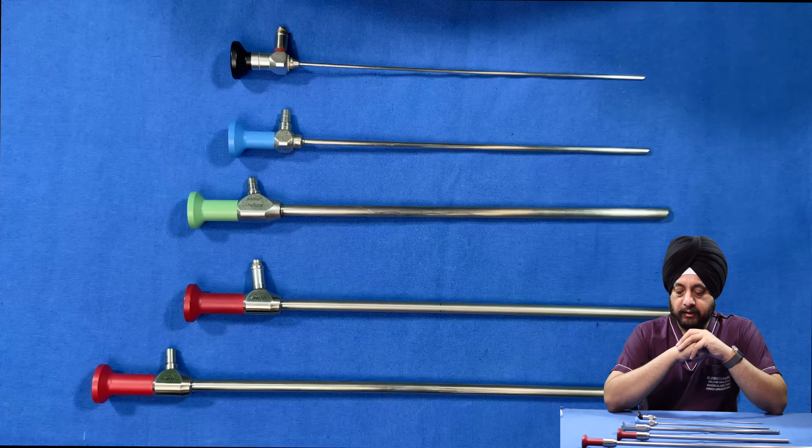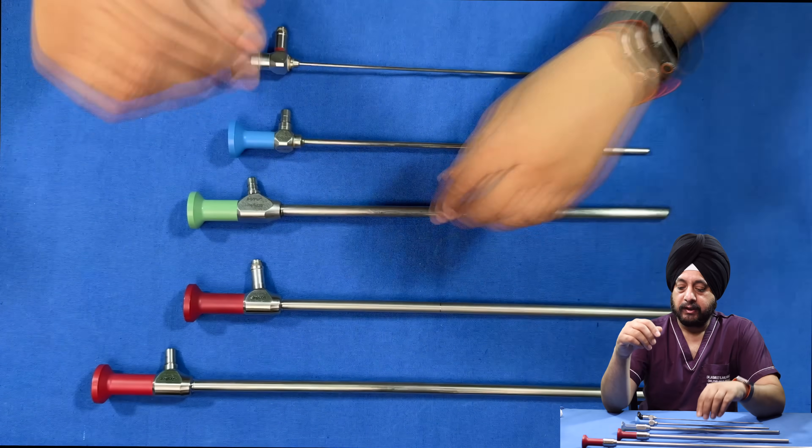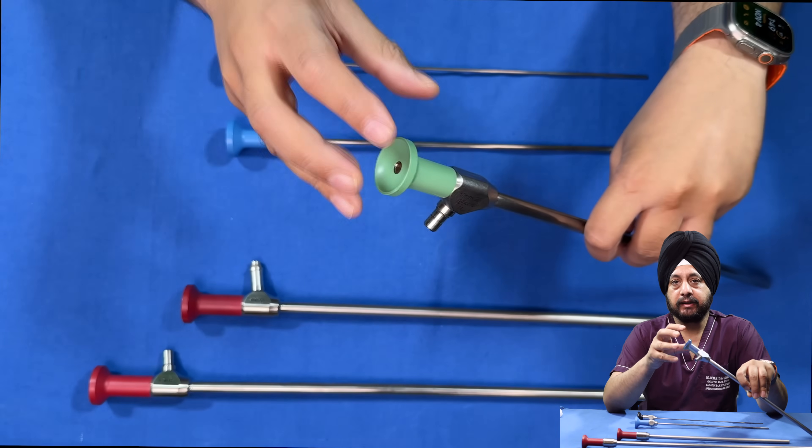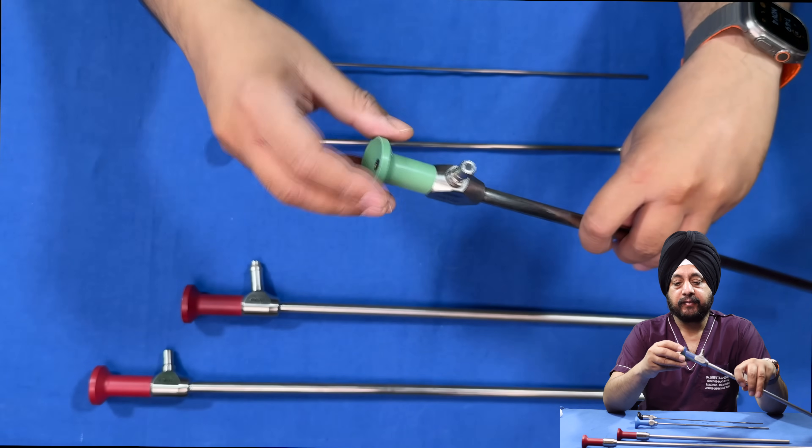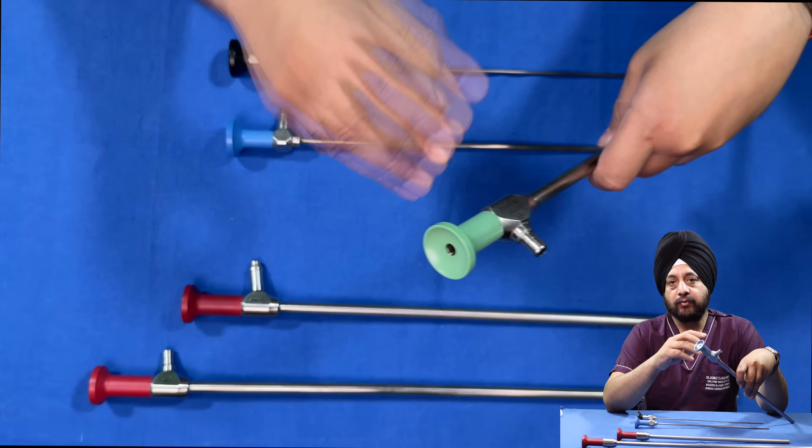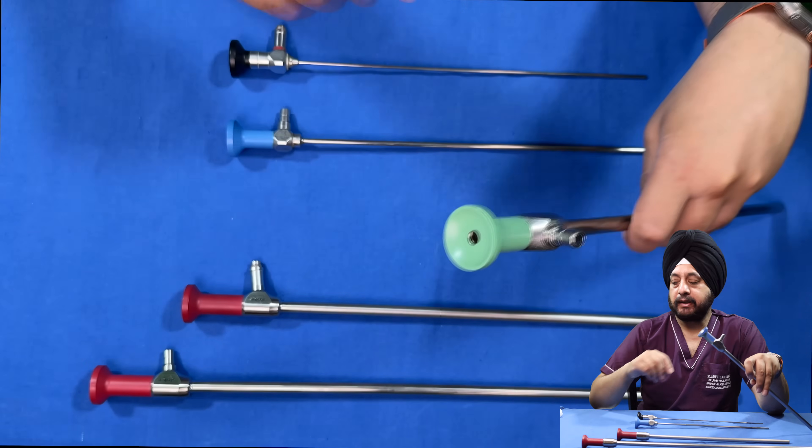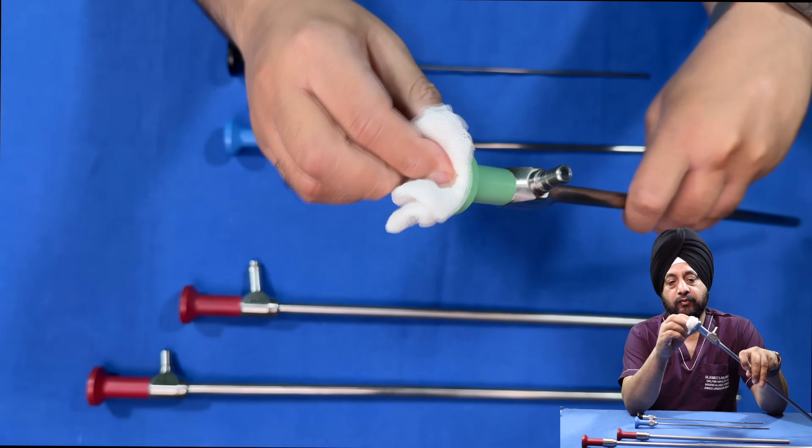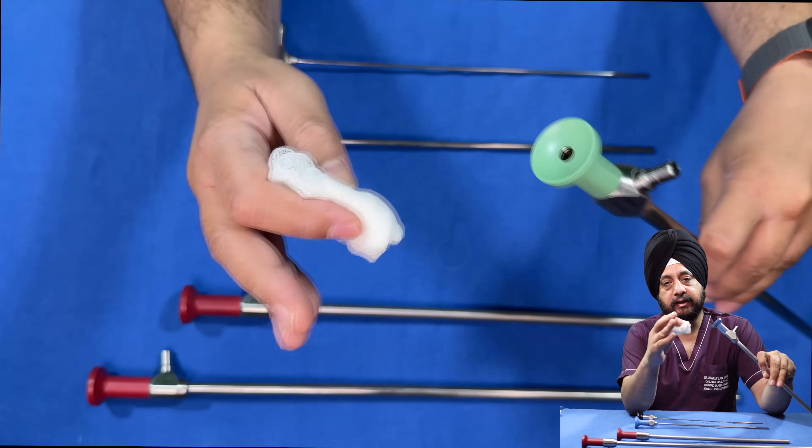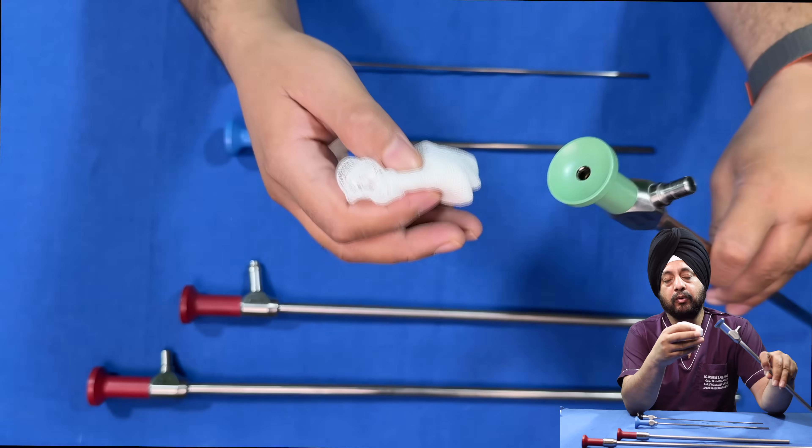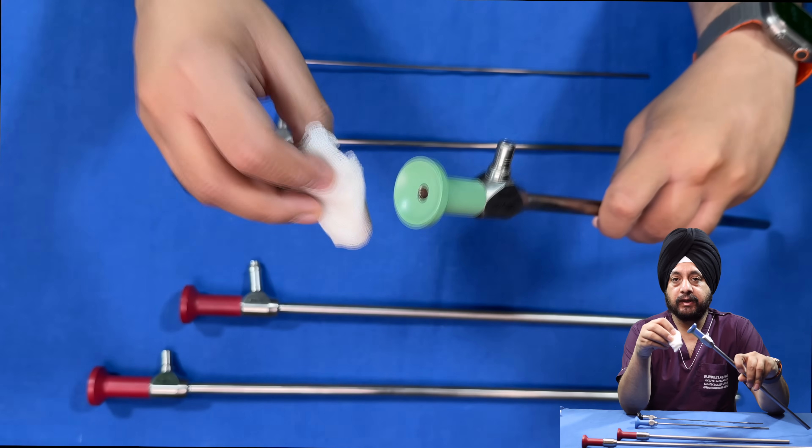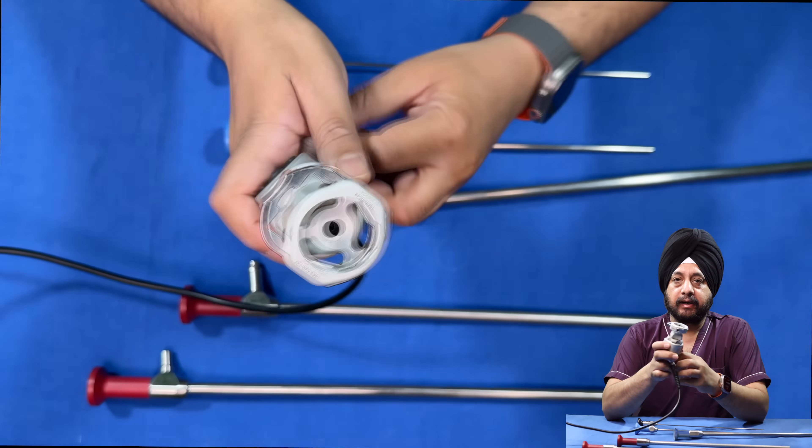The parts of the scope: this is the end where you're going to attach the camera head. This goes into the camera head. Make sure you clean the tip very well before you start the procedure with a dry gauze. Like this, you wipe it off and then reflect light off the tip of the lens to check for impurities, scratches, or moisture.